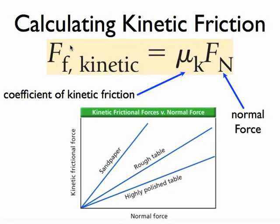Now we can talk about calculating kinetic and static friction. Your kinetic friction is equal to μ_k, which is your coefficient of kinetic friction, times the normal force.